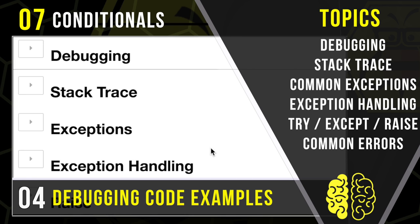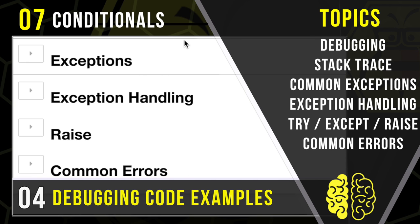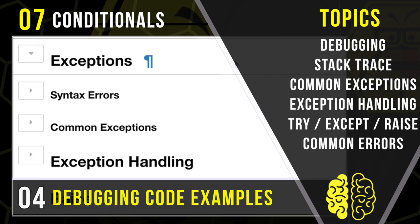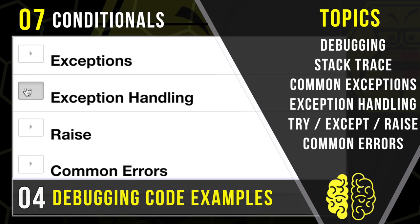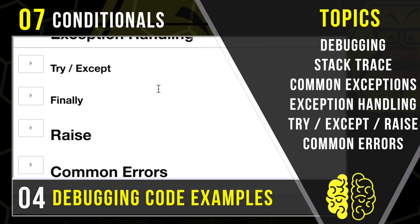We're going to look at what that means. Then we're going to talk about exceptions themselves and learn about the common types that come with Python. We'll also talk about some of the ways you can tell between a syntax error and an exception error, and some of the common exceptions we get in Python. Then we're going to talk about how to handle these exceptions. Some of the keywords we're going to learn, like try and except, are very similar to the conditionals if/else that we learned earlier. Then we'll talk about some other keywords, like finally and raise.